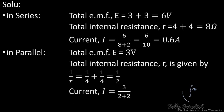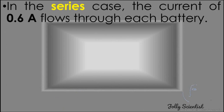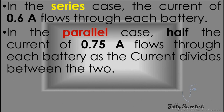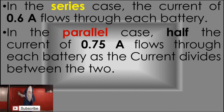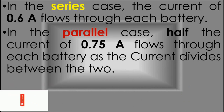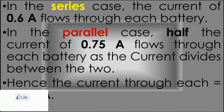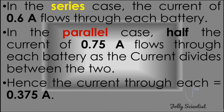The current in the parallel arrangement equals 3 divided by 4, which is 0.75 amps. In the series case, 0.6 amps flows through each battery. In the parallel case, half the current — 0.375 amps — flows through each battery, as the current divides between the two.